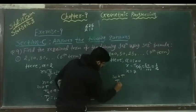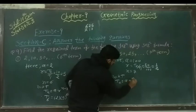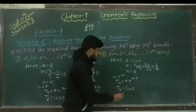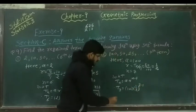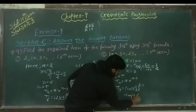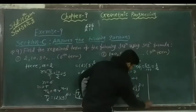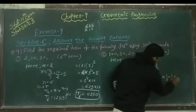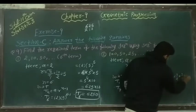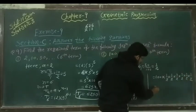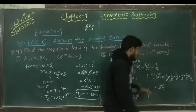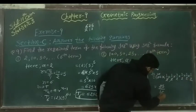We know that T_N is equal to A into R raised to N minus 1. Therefore T_7 is equal to 100 into (1/2) raised to 7 minus 1, which equals 100 into (1/2) raised to 6. Now (1/2) multiplied 6 times gives 1 over 64. So 100 divided by 64 simplifies to 25 by 16. So the seventh term of the given GP is 25/16.